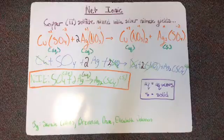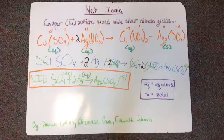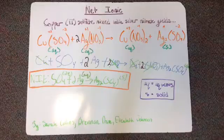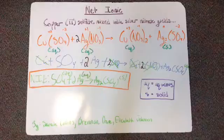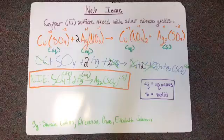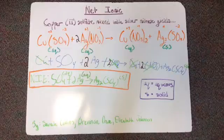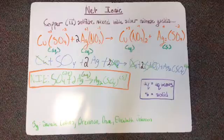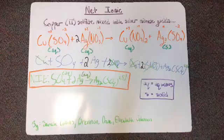And we use aqueous states. We find out CuSO4 is aqueous, or liquid, and 2 AgNO3, which is aqueous, and then Cu(NO3)2, which is aqueous, and Ag2SO4, which is a solid.